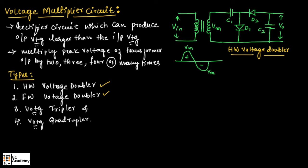This diagram shows the half wave voltage doubler circuit. Here, we have considered a transformer which has a primary side as well as a secondary side. For the secondary end of the transformer, we are connecting two capacitors as well as two diodes as shown in this figure. The output voltage will be measured at capacitor C2. So, input to the circuit will be the voltage across the secondary of the transformer, which is Vm, and output is measured across capacitor C2.